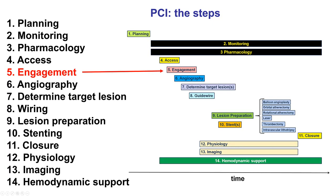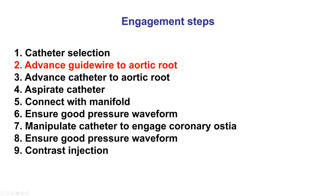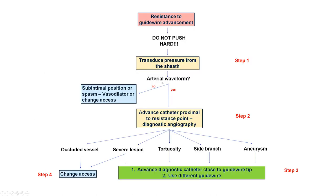This video focuses on engagement, which is the fifth of the 14 steps of Percutaneous Coronary Intervention, and specifically on steps 2 and 3 of engagement: getting the guide wire to the aortic root and advancing a catheter to the aortic root. Starting with resistance to guide wire — what to do?